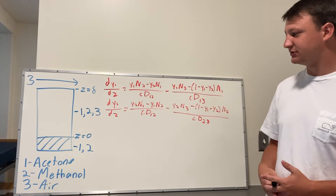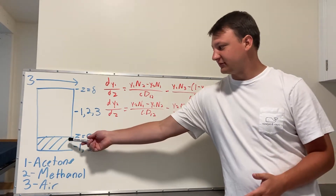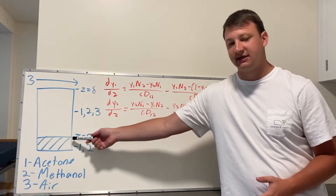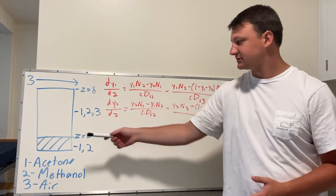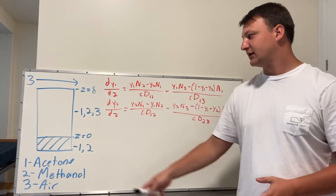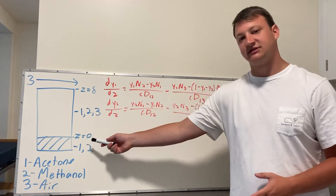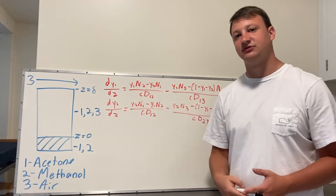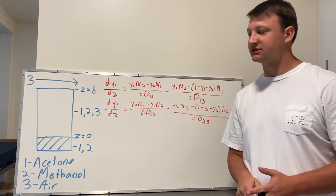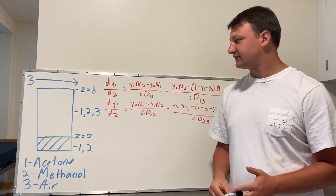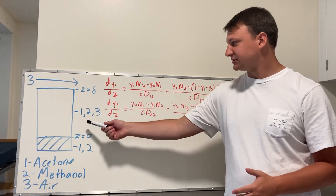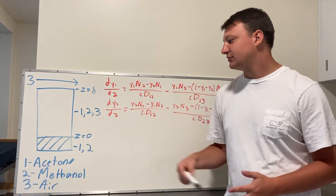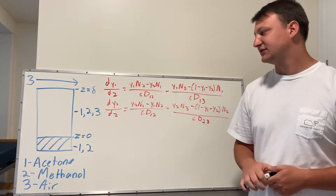Looking closely at the tube, we have our liquid mixture down below, and at the interface between our liquid and our gas, we're going to call that our z-position, which equals zero there. At the top of the tube, we're going to have our z-position equal to delta, which is given to us in the problem, and we're going to have a mixture of gaseous acetone, methanol, and air in the tube.